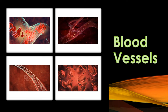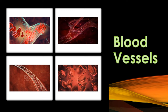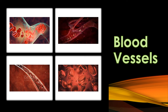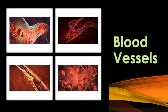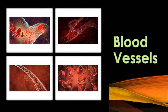The blood vessels are the channels that transport blood throughout the body. The arteries carry oxygen-rich blood away from the heart and into the body, while the veins carry oxygen-poor blood back to the heart. Capillaries are the smallest blood vessels, and they connect the arteries and veins, allowing for exchange of nutrients, oxygen, and waste products between the blood and the body tissues.